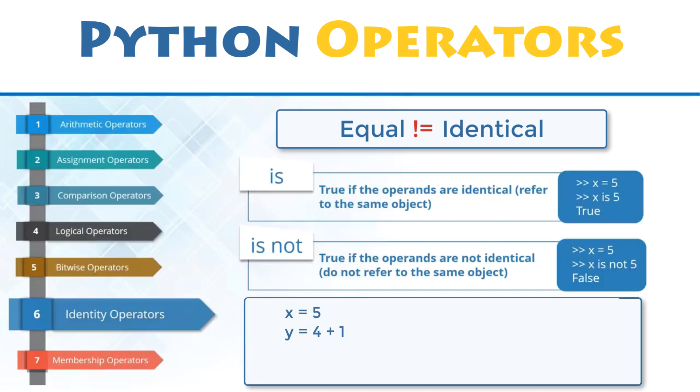Here is an example of two objects that are equal, but not identical. X and Y both refer to objects whose value is 5. They are equal, but they do not reference the same object. As you can verify, X and Y do not have the same identity and X is Y returns false.